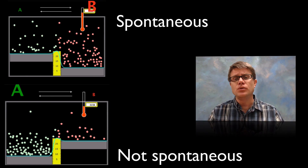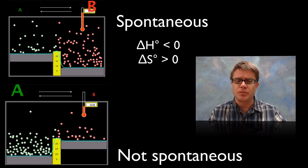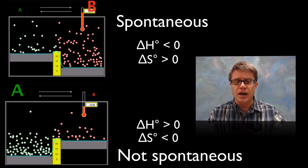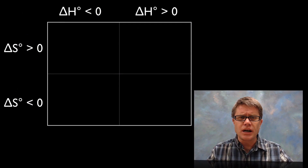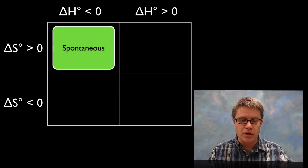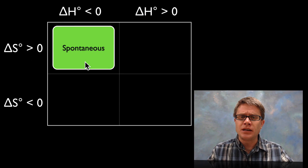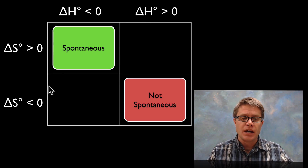In a spontaneous reaction, you know it's spontaneous right away if you see a decrease in enthalpy — decrease in that internal energy — and an increase in entropy. It's non-spontaneous if we see the opposite: an increase in enthalpy (an endothermic reaction) and a decrease in entropy. In the upper left of our table we see an increase in entropy and a decrease in enthalpy — an exothermic reaction becoming more random over time — and we know right away that's spontaneous. In the lower right we see an increase in enthalpy (endothermic) and a decrease in entropy, and we know right away that's not spontaneous.